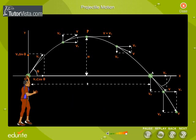At this point, the velocity is only along the horizontal direction. With further increase in time, the vertical component of velocity gradually increases in the downward direction till the particle strikes the ground.